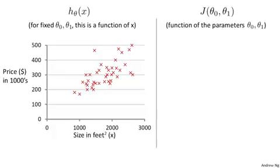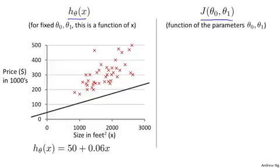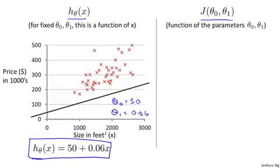Same as last time, we want to understand the hypothesis h and the cost function j. So here's my training set of housing prices, and let's pick some hypothesis like that one. This is not a particularly good hypothesis, but if I set theta 0 equals 50 and theta 1 equals 0.06, then I end up with this hypothesis down here, and that corresponds to that straight line. Given these values of theta 0 and theta 1, we want to plot the corresponding cost function on the right.